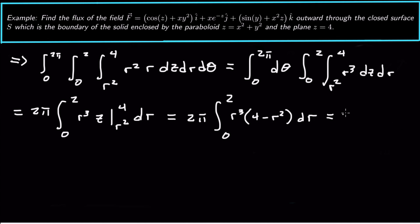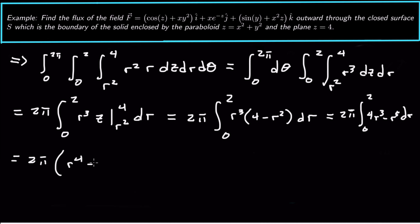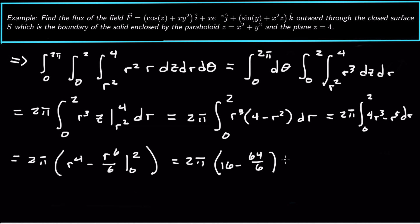Now it's just a nice single integral: 2π times the integral from 0 to 2 of (4r³ − r⁵) dr. That gives us 2π times [r⁴ − r⁶/6] evaluated from 0 to 2, which equals 2π times (16 − 64/6). When you reduce that, you get 32π/3.